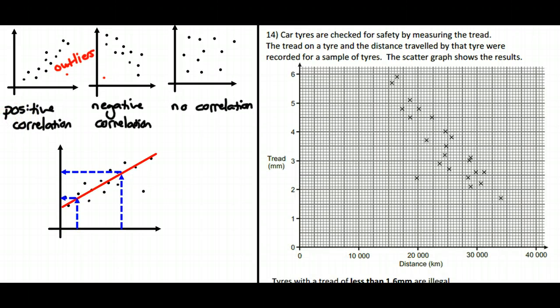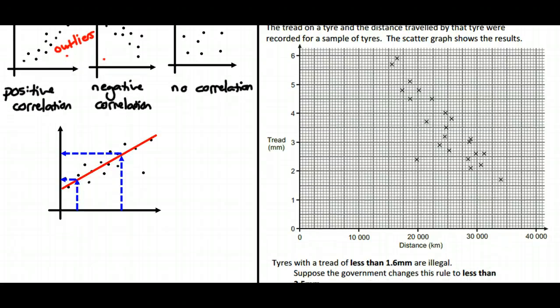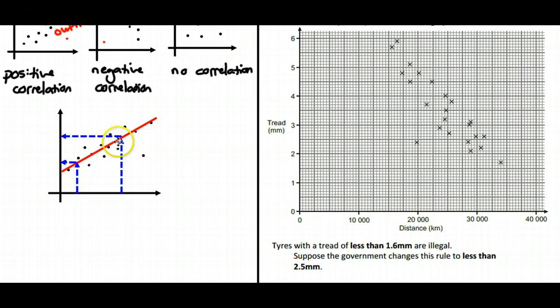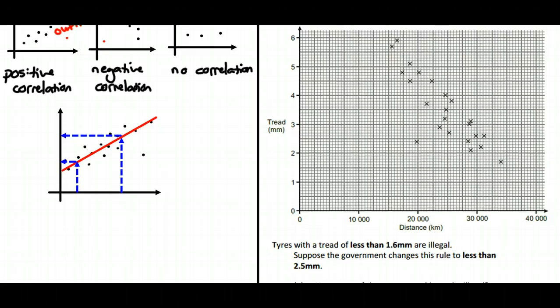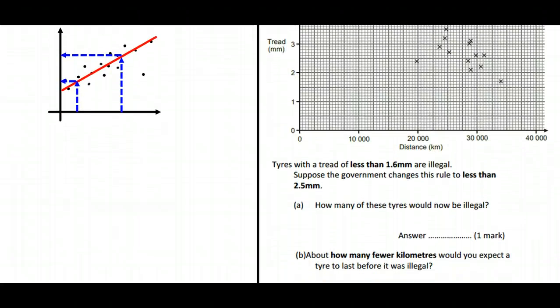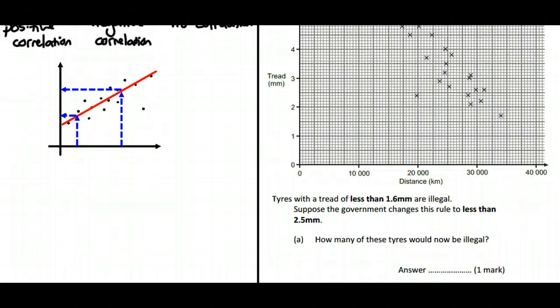So we've got the distance versus the tyre tread, and the question asks us: Suppose the government changes this rule from 1.6mm being illegal to 2.5mm, how many of these tyres would now be illegal?